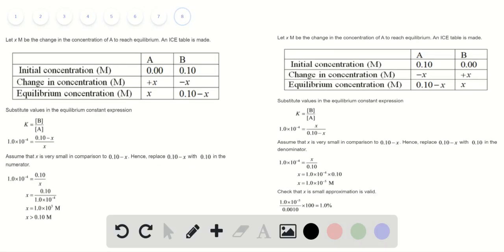For option B, again let x be the concentration change of A to reach an equilibrium point B. We substitute the values again into the same equation and we assume that x is very small in comparison to 10 raised to 0.10 minus x.